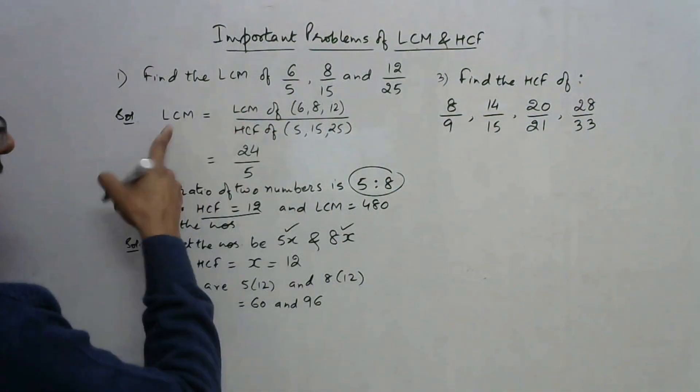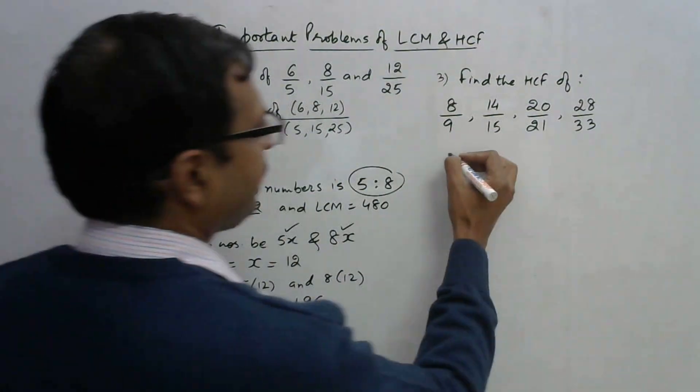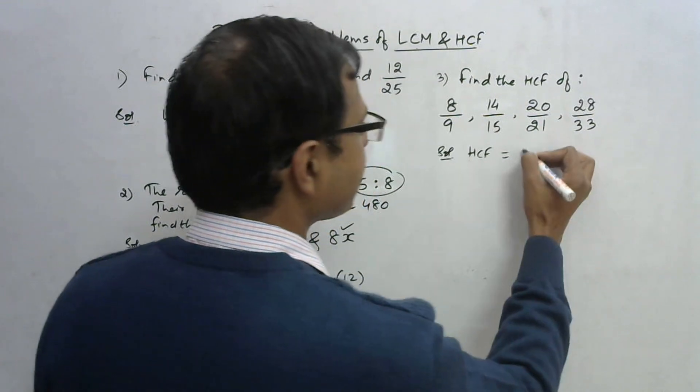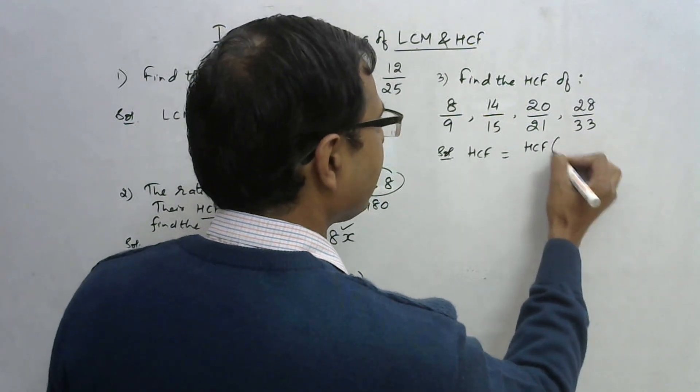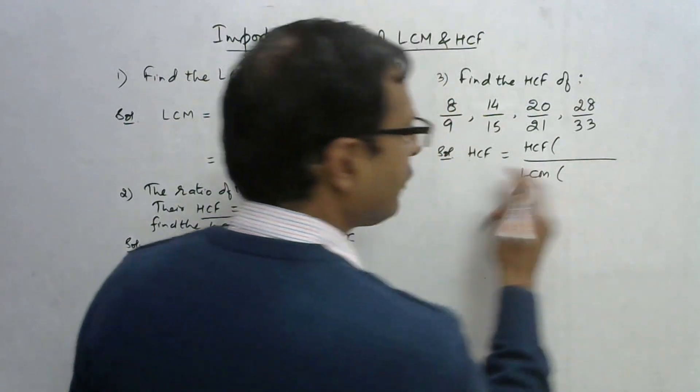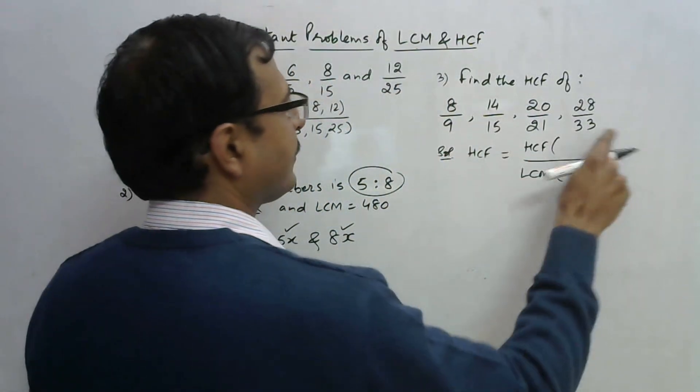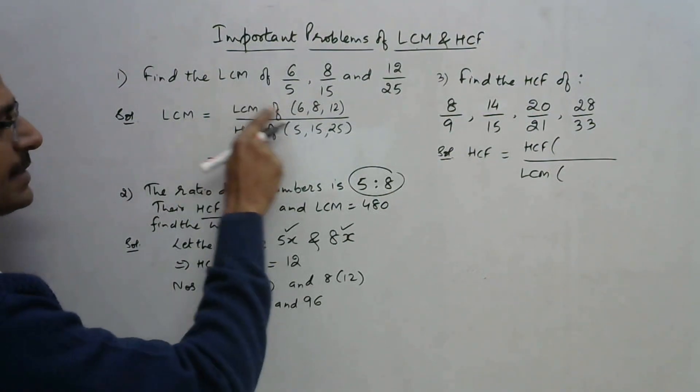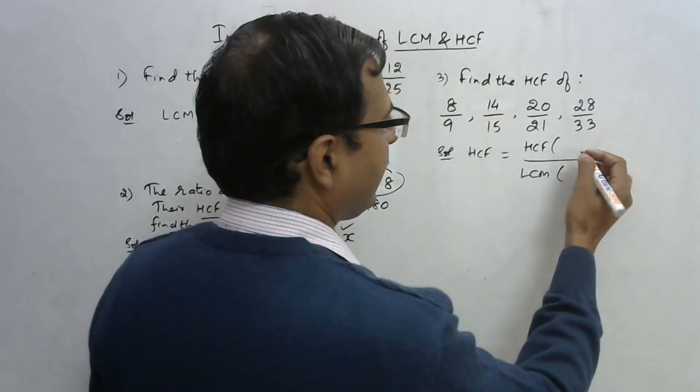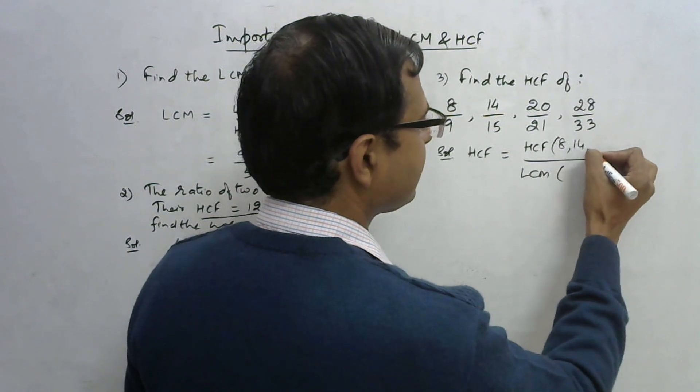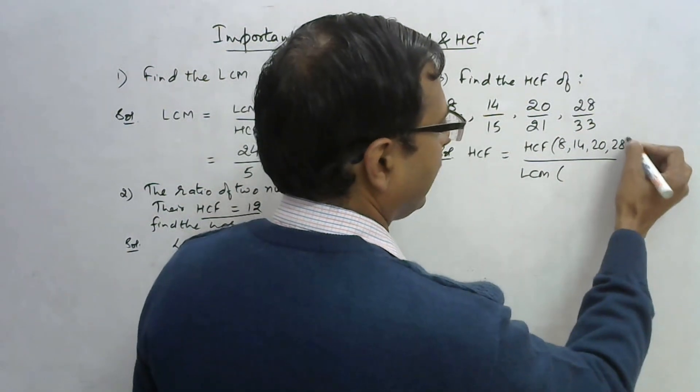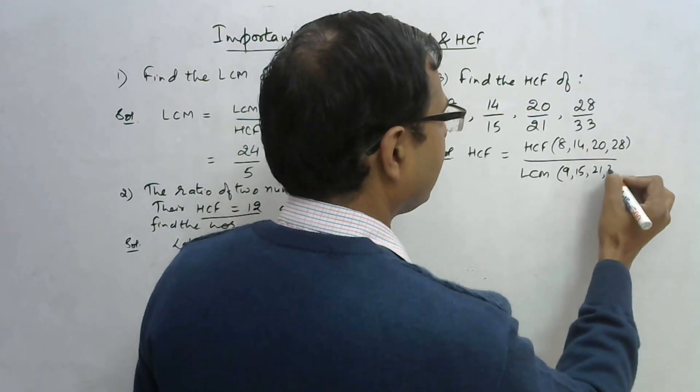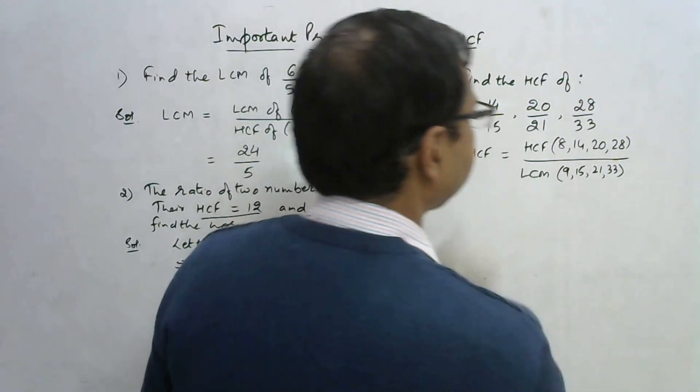Unlike before where we were finding the LCM, now we have to find the HCF. How do you find the HCF of four fractions? Take HCF in numerators and LCM in the denominators. So HCF should come in the numerator, and LCM will come in the denominators 9, 15, 21, and 33.